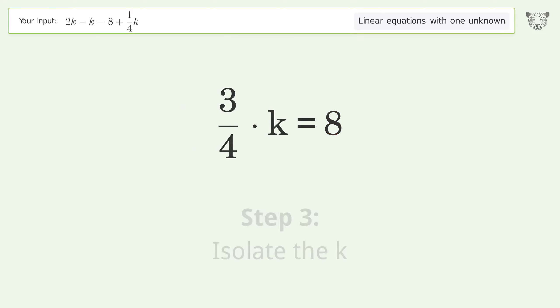Isolate the k by multiplying both sides by the inverse fraction, 4 over 3.